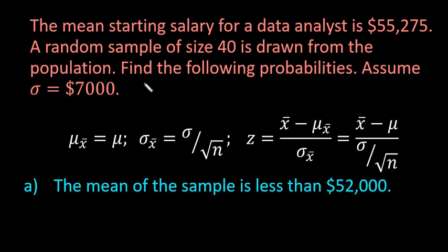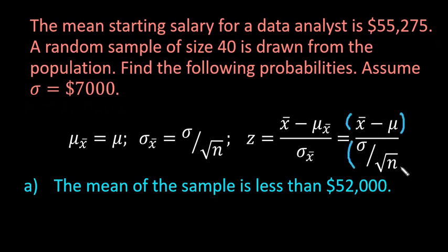If you were doing hand calculations, these are the formulas you would use. Remember that mu sub x-bar is the mean of the sampling distribution of the sample means, and the mean of the sampling distribution equals the mean of the population. The standard error equals the population standard deviation sigma divided by the square root of the sample size. If using a table, you must convert to a z-score using this formula.